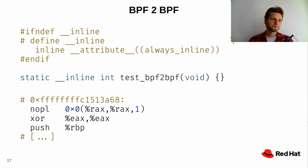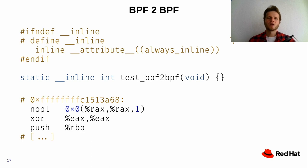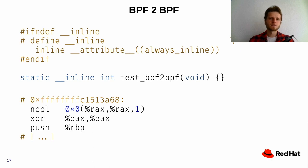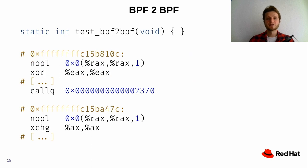Now we come to another important topic: BPF-to-BPF calls. In the past, everything had to reside within the very same function — the same block of instructions. Whenever you wanted a common function shared between various BPF programs, you had to specify it as always-inlined. Up to I believe kernel 4.18 with Clang/LLVM 6, there was simply no other option. Since then, we don't have to do this anymore — we now have BPF-to-BPF calls in the kernel, allowing actual calls between sub-programs inside your main BPF blob.